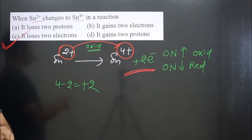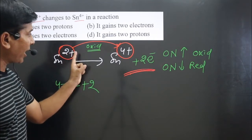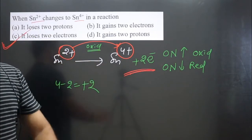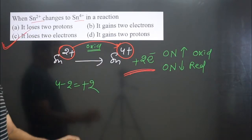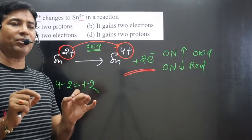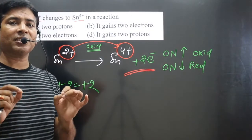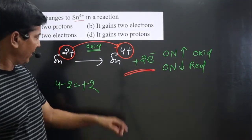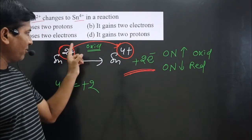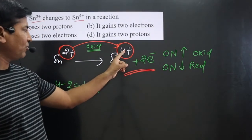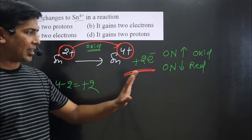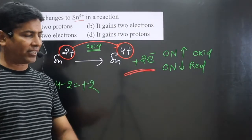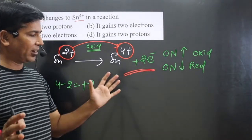The loss of electrons is decided by finding the difference in oxidation number. When we find the difference, we always subtract the smaller value from the larger value — this is the small value, this is the large value. Four minus two equals two electrons. Since it is oxidation, we add electrons on the right side, and we got the answer: two electrons lost.